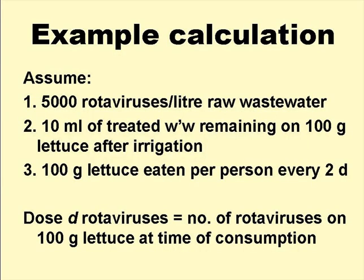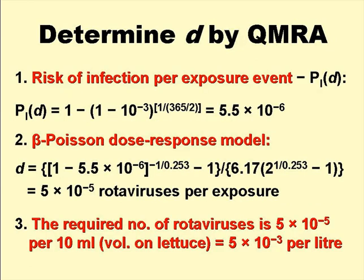We'll now illustrate the QMRA approach by means of an example set of calculations. We have to make some reasonable assumptions — for example, let's assume that the raw wastewater contains 5,000 rotaviruses per litre, that 10 ml of treated wastewater remain on 100 grams of lettuce after irrigation, and that people eat 100 grams of lettuce every second day. The pathogen dose D in the QMRA equations is, in this case, the number of rotaviruses on 100 grams of lettuce at the time of consumption. We determine D by QMRA as follows.